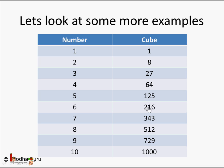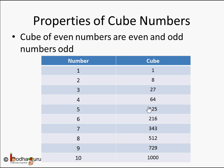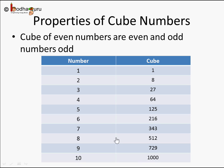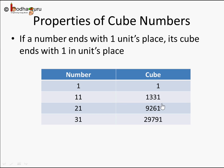Now let's look at some simple properties of cube numbers. If the number is even — like 2, 4, 6, 8, or 10 — its cube is also an even number: 2³ = 8, 4³ = 64, 10³ = 1000, 8³ = 512. Similarly, if the number is odd — like 1, 3, 5, 7, 9, or 11 — its cube is also an odd number: 1, 27, 125 are all odd.